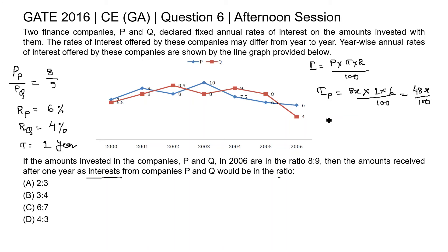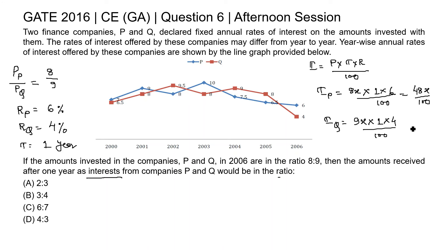Similarly, the interest received after one year for company Q: the principal amount is 9, so suppose 9x. Then 9x × time of 1 year × rate of interest for Q of 4 percent gives 9 × 4 = 36x divided by 100.